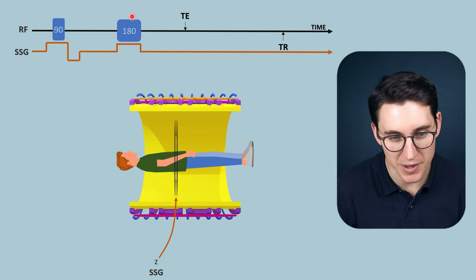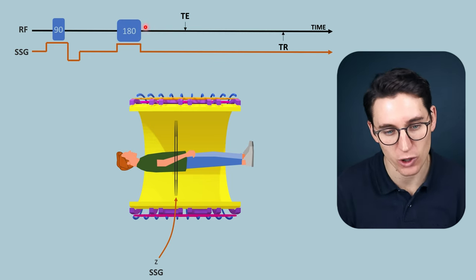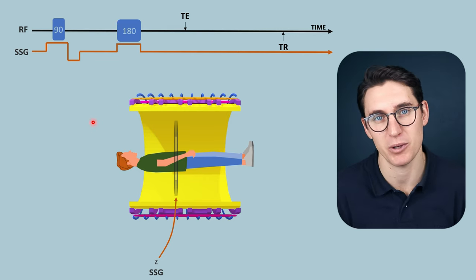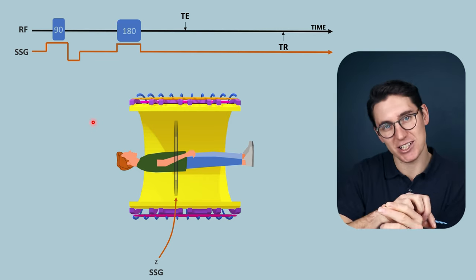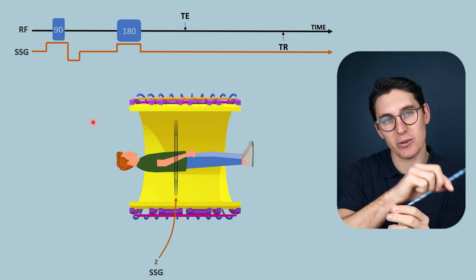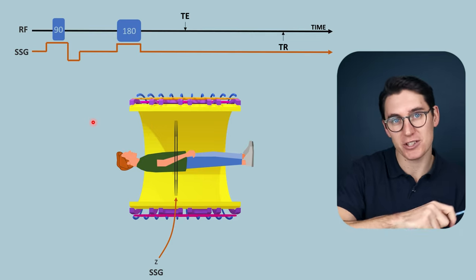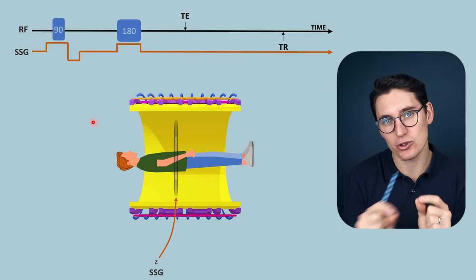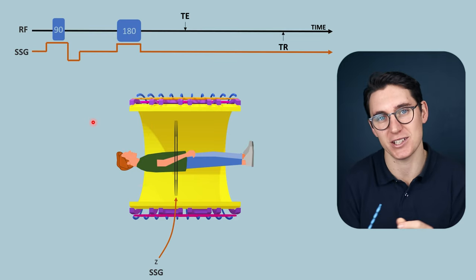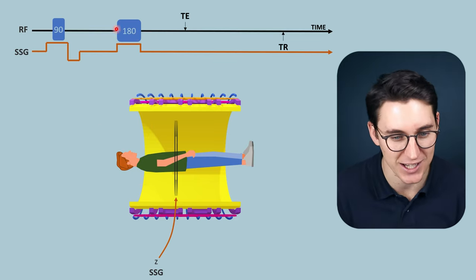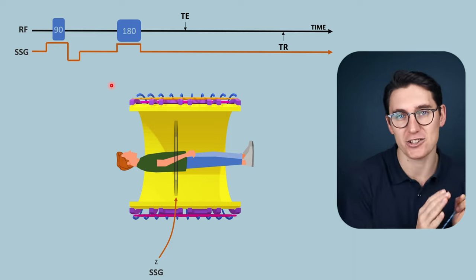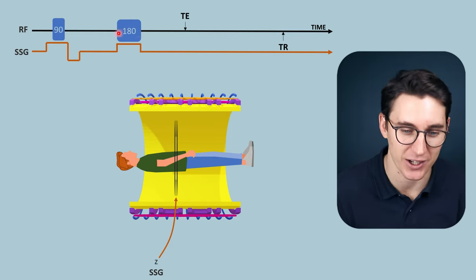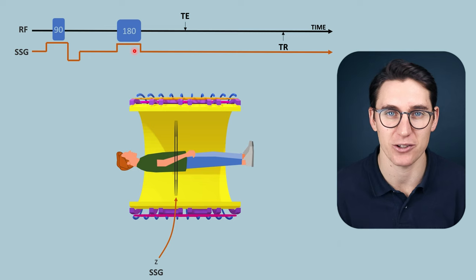As described in the T2 relaxation talk, we then apply a 180-degree radio frequency pulse. That 180-degree RF pulse allows those spins to start to rephase with one another and accounts for the T2-star differences within the tissues. If that sounds unfamiliar, go back to the T2 relaxation talk to understand why we apply this 180-degree RF pulse.